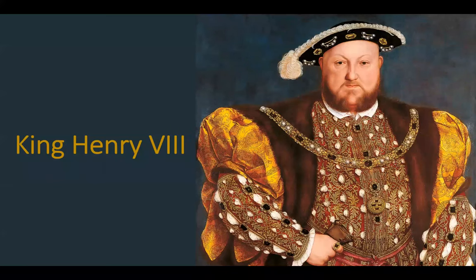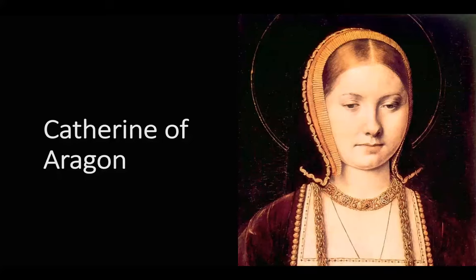King Henry VIII's turbulent love life played a major role in the English Reformation. This starts even before the English Reformation began, because his father, King Henry VII, arranged for Catherine of Aragon to marry his oldest son, Arthur. King Henry VII did this in order to secure an alliance with Spain, which was ruled at that time by King Ferdinand II — the same king under which Christopher Columbus sailed to the new world.